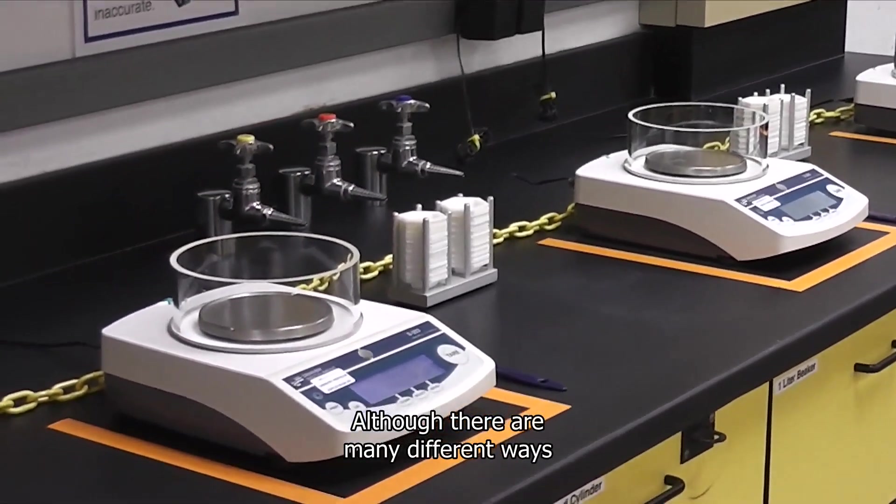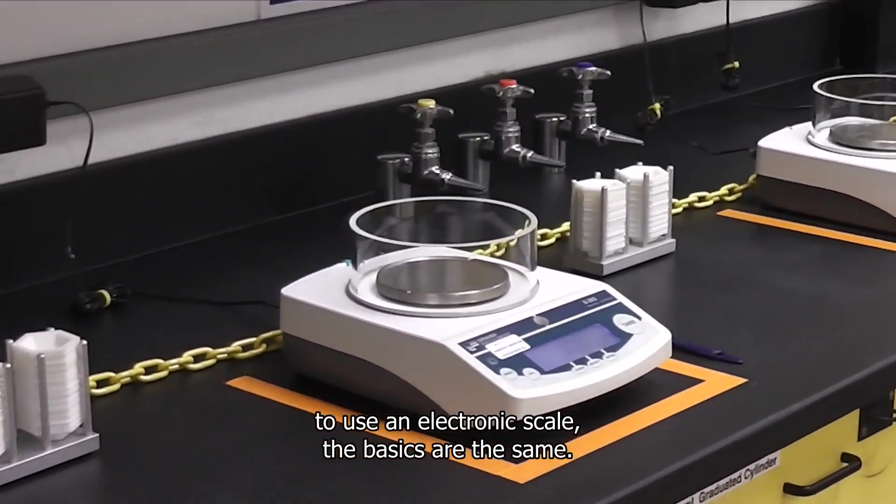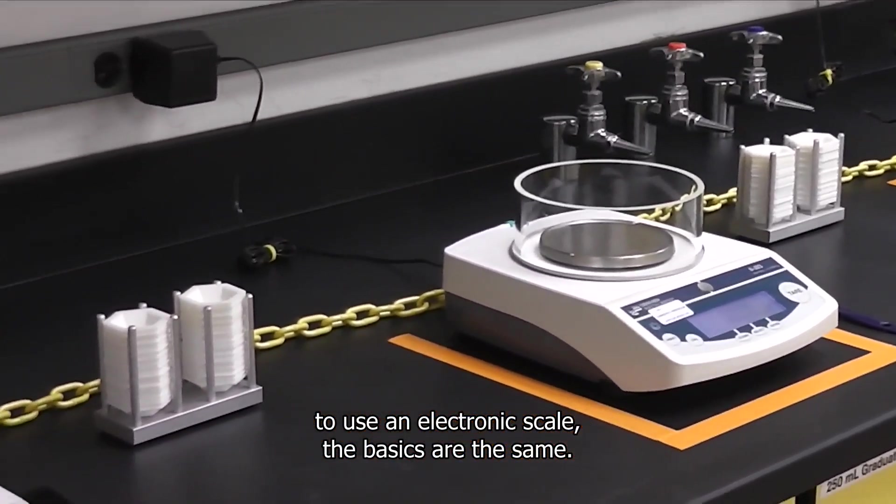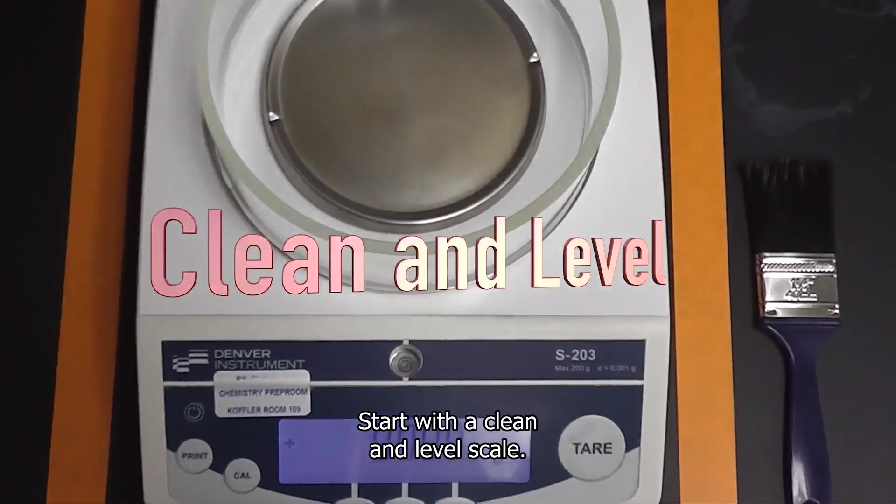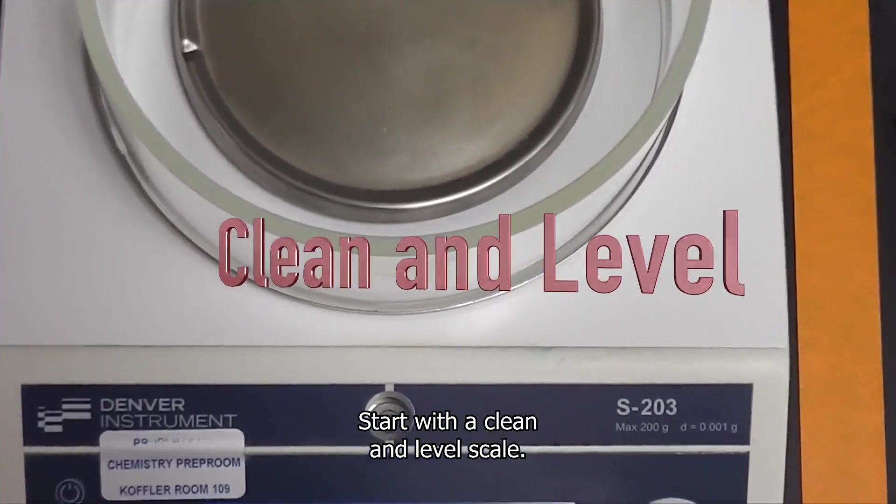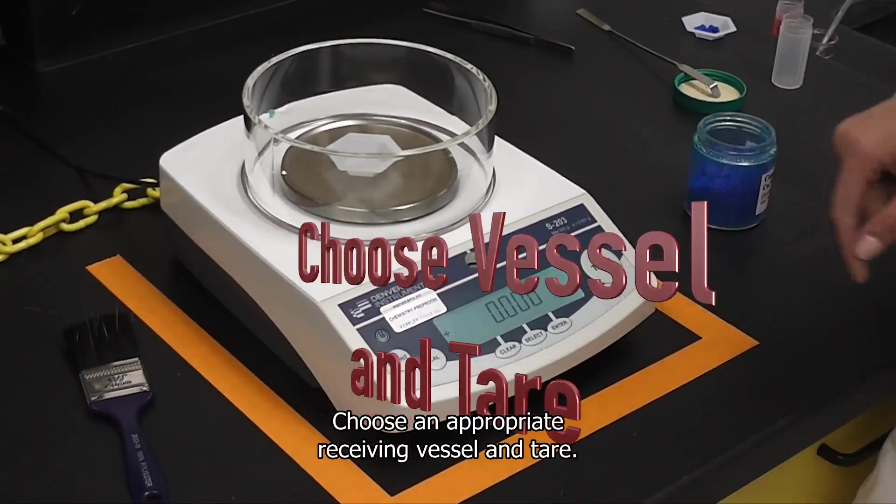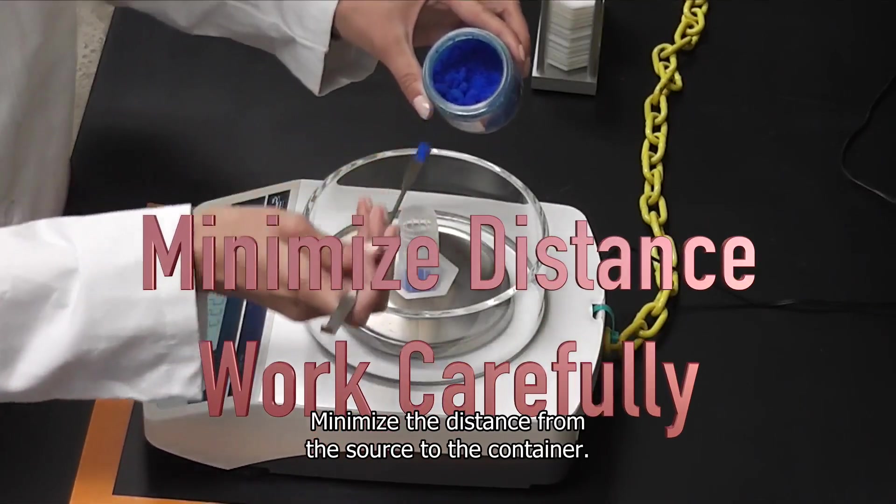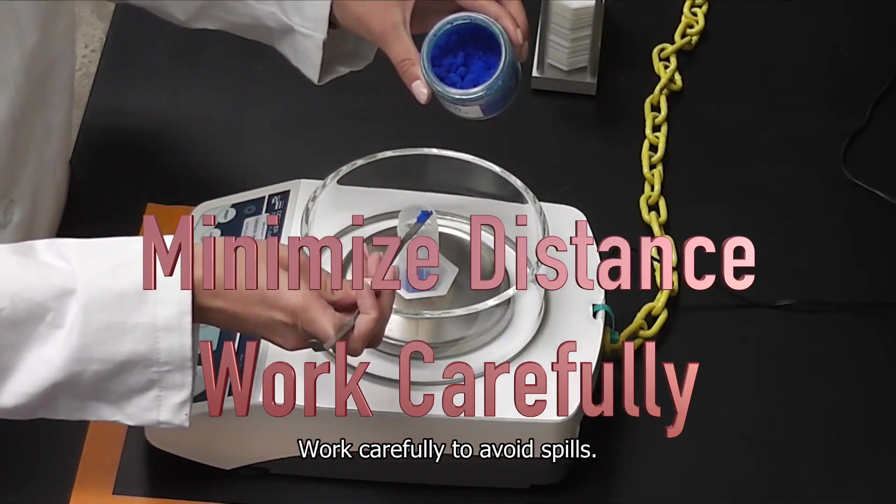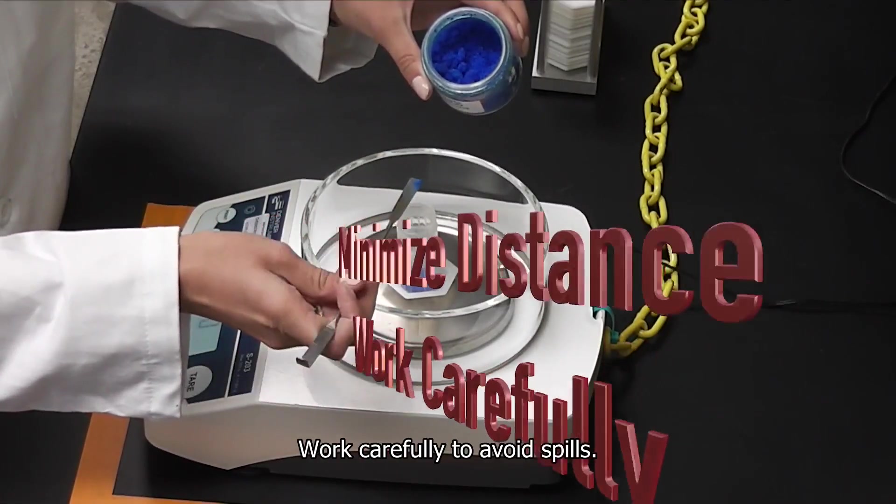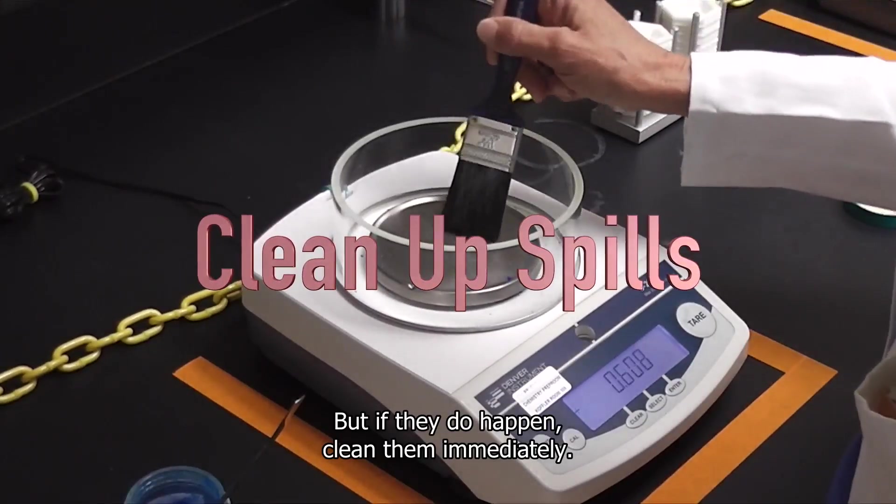Although there are many different ways to use an electronic scale, the basics are the same. Start with a clean and level scale. Choose an appropriate receiving vessel and tare. Minimize the distance from the source to the container. Work carefully to avoid spills, but if they do happen, clean them immediately.